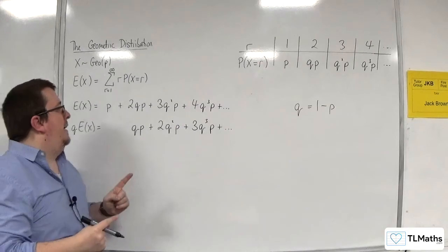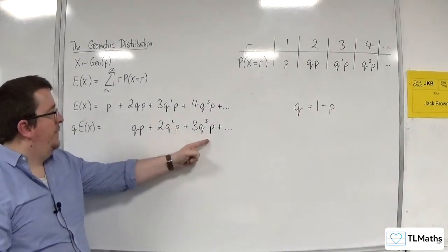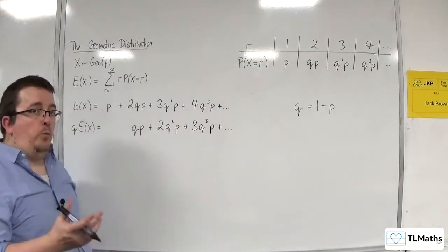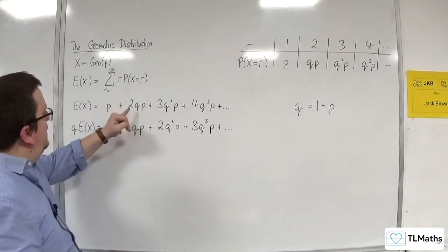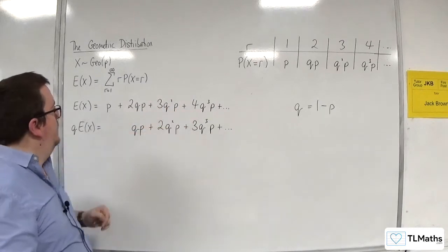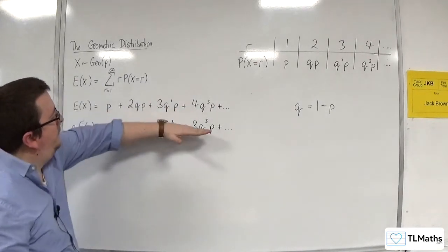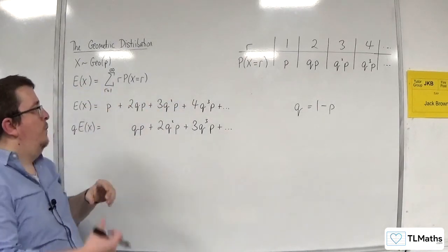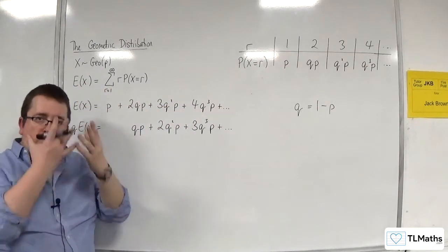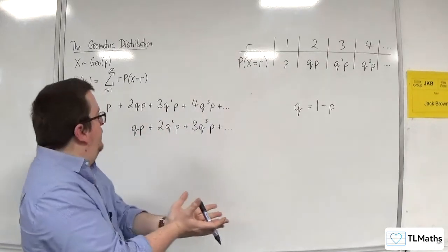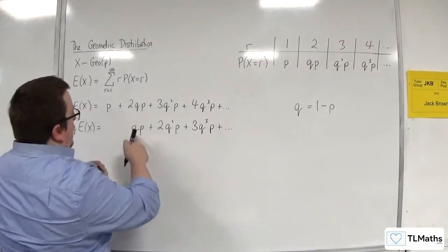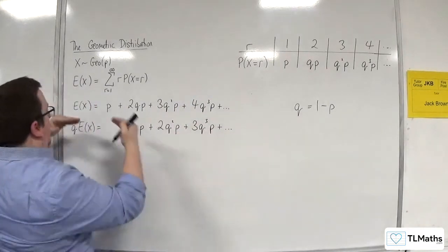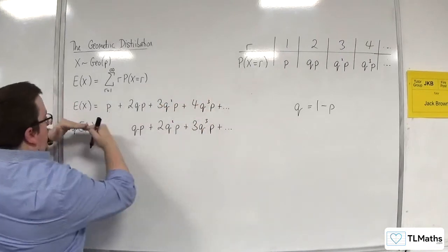Now, notice how the coefficient of each term here on this line, so 1, 2, 3, is always 1 less than the coefficient in my first line: 2, 3, 4. So, if I was to subtract this row from that one, that would get rid of all of my problems with the coefficients, because I would end up with 1, 1, 1, etc. So, I'm going to do that line, take away that line.